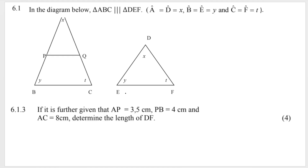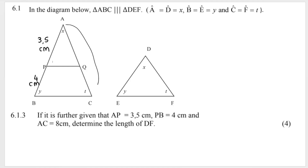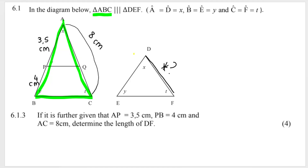6.1.3 says it is further given that AP is equal to 3.5 centimeters — this line over here. PB, which is this line over here, is equal to 4 centimeters. And AC — the full line from A all the way to C — is equal to 8 centimeters. Determine the length of DF, which is this one over here. So how do we do this? What I do know, remember from the beginning, is that triangle ABC — this big triangle over here — is similar to triangle DEF, this one over here.